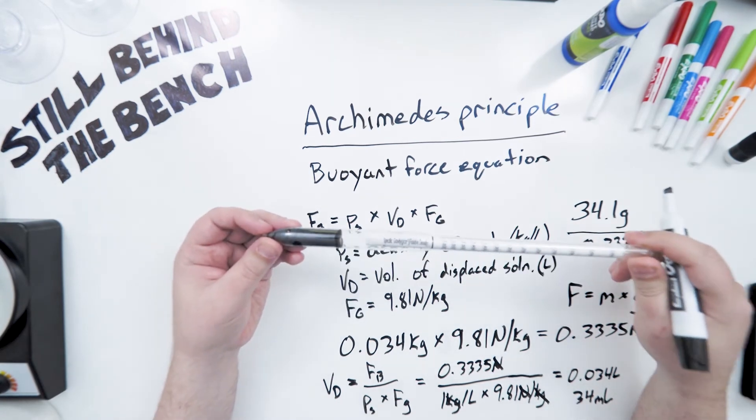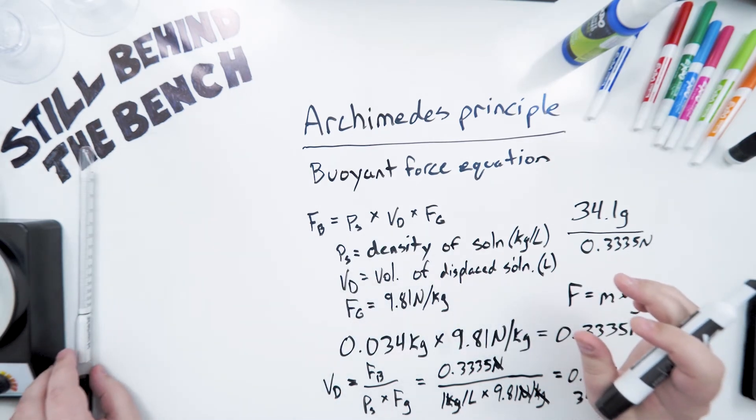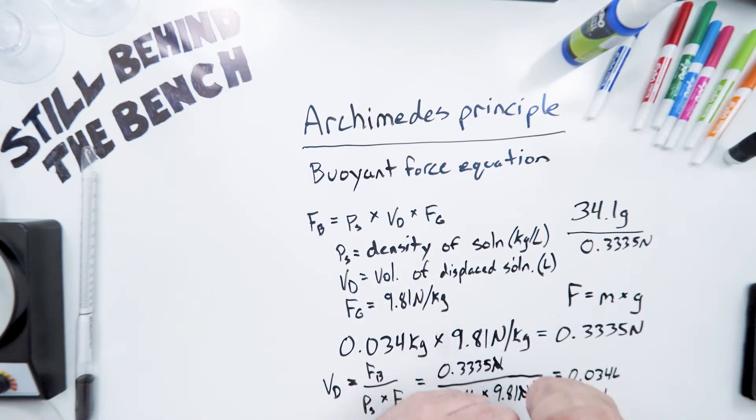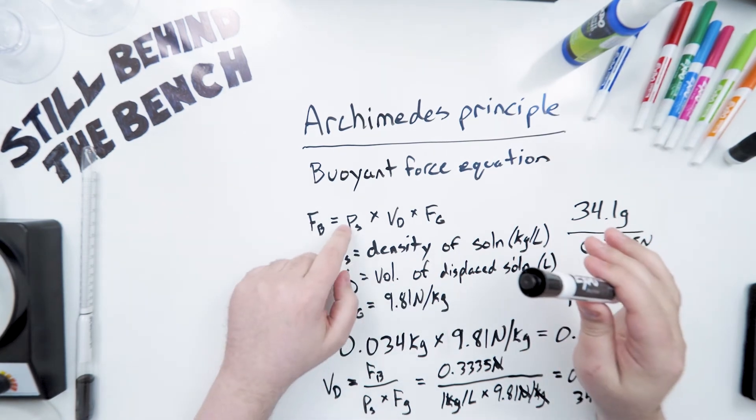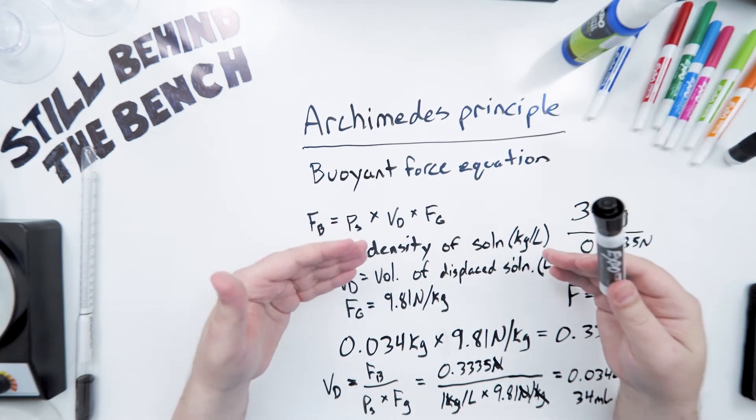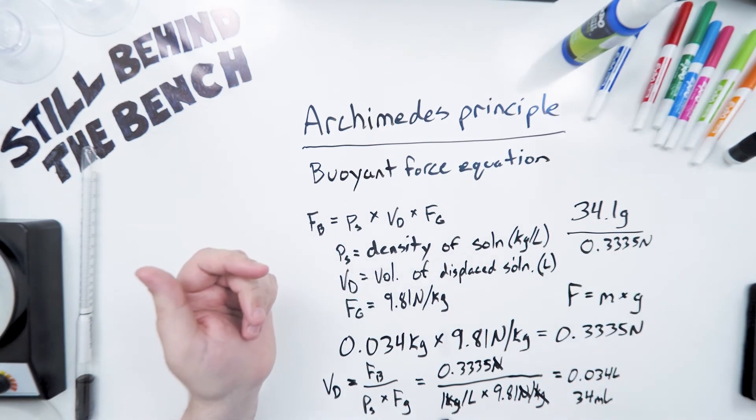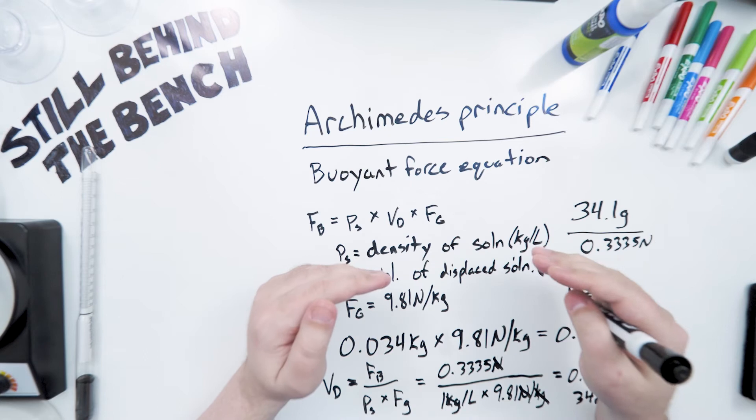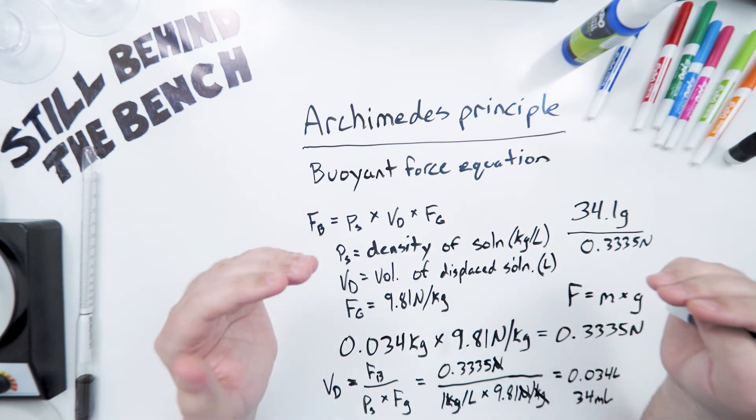Why is this important to know? Well, we know that the mass of the hydrometer is not going to change, and for our purposes, force of gravity is not going to change. That only leaves us with the density. So the more dense a solution is, the less liquid the hydrometer will displace, and so the hydrometer will sit higher in the liquid. For instance, if this was instead 2 kilograms per liter, this would end up being 17 milliliters. If this was half a kilogram per liter, this would end up being 68 milliliters. And the opposite is true: the less dense the solution is, the more liquid the hydrometer will displace, and so the hydrometer will sit lower in the liquid.